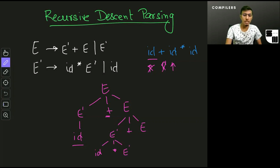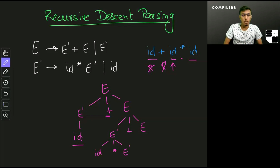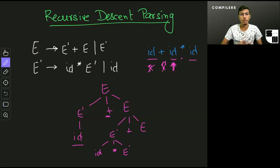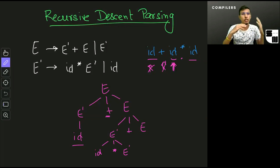At this point I successfully get 'id' followed by the asterisk followed by 'id' using the production rule for E'. But although I've run out of input, my tree still has symbols left, which means something is wrong. I backtrack and start again from the cursor position I haven't changed yet. That's the idea of how recursive descent parsing works — use production rules one by one, and if something goes wrong, backtrack to the last step and continue with the next production rule.